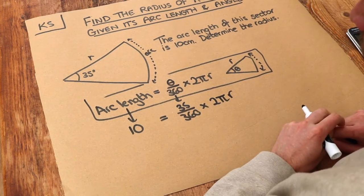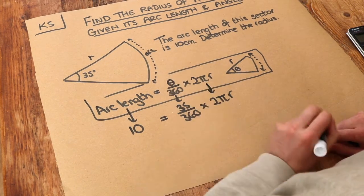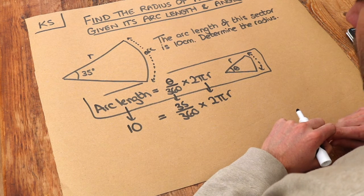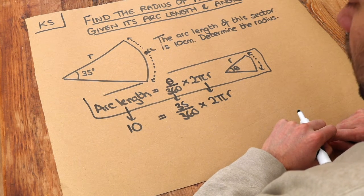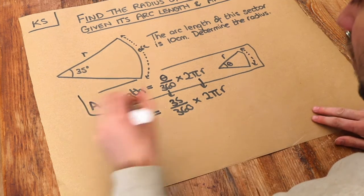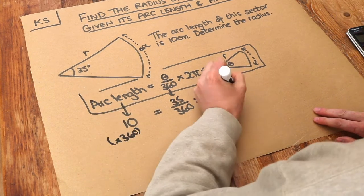This just becomes a case of solving an equation. We need to find out what the value of r is, because that's the one unknown. Let's do it bit by bit. I don't like fractions, so I want to get rid of that divided by 360. I'm going to multiply both sides by 360 first.